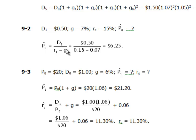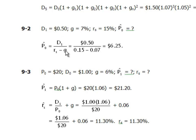A second condition: the required rate of return must be greater than g. If rs is less than g, you would have a negative denominator, and since the dividend cannot be negative, you'd get a negative stock price, which doesn't make sense. So to summarize, the two conditions are: g must be constant, and rs must be greater than g.